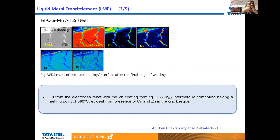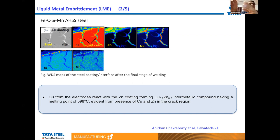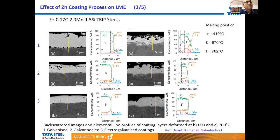Work by Andirban and co-workers presented at Galvatech studied the effect of copper electrodes in resistance spot welding. The WDS map at the steel-coating interface in the final welding stage shows cracks, with zinc and copper predominantly present. The presence of zinc and copper forming an intermetallic with a lower melting point creates embrittlement.